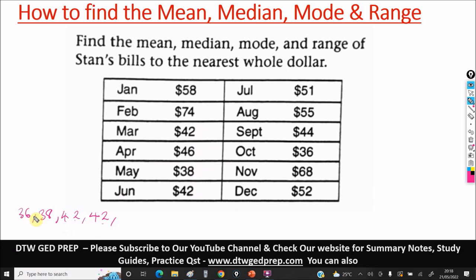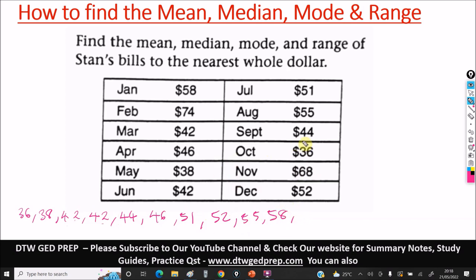To choose the median, all your data values must be present. We have 12 data values in the table, so our arranged list must have 12. Continuing: 44, 46, 51, 52, 55, 58, 68, and finally 74 — that's the largest number. Now we need to find the middle number.